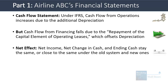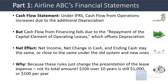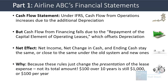Net income, the net change in cash, and ending cash stay the same or very close across old and new systems. Remember, these rules just change the presentation of the lease expense, not its total amount. If a company leases something and pays $100 per year over 10 years, that's still a $1,000 expense over those 10 years — it just shows up slightly differently at different times and in different places on the statements.